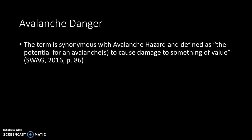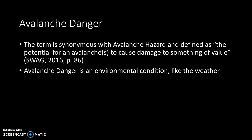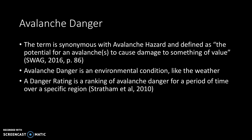Before we jump into that, let's do a quick review of some definitions. This is from SWAG, the 2016 edition — hopefully you have a copy by now. On page 86, it defines avalanche danger as the potential for avalanches to cause damage to something of value. The terms danger and hazard are used synonymously in the 2016 SWAG. Avalanche danger is an environmental condition — worth remembering. And avalanche danger is a ranking of avalanche danger for a period of time over a specific region, which is important as we start thinking about the danger ratings we issue or read from avalanche bulletins.